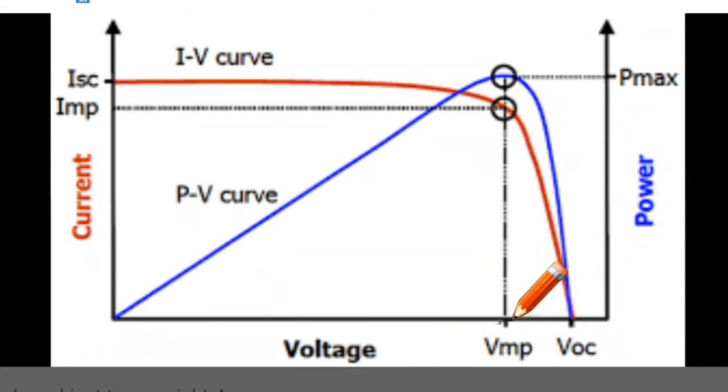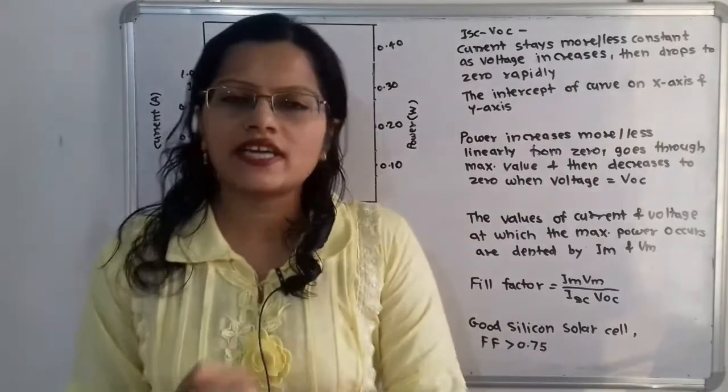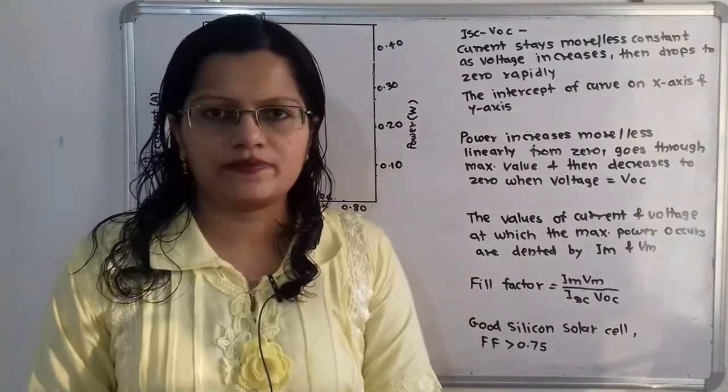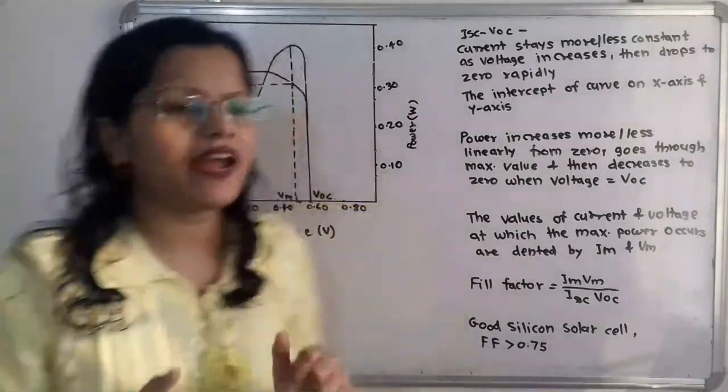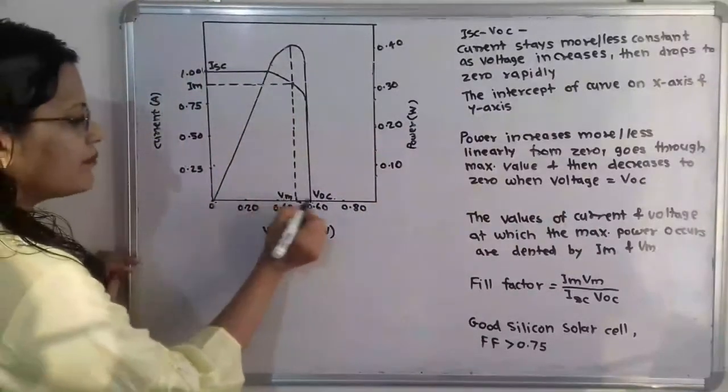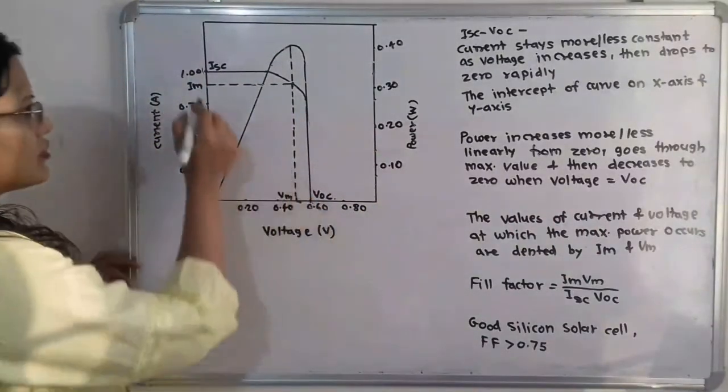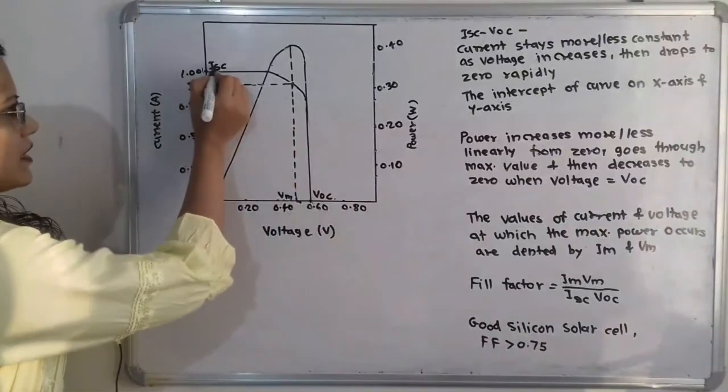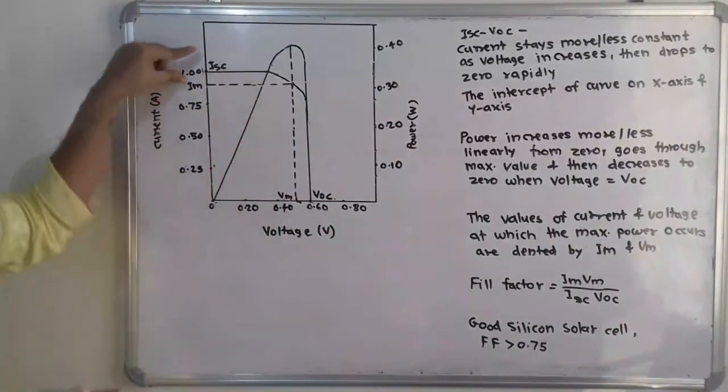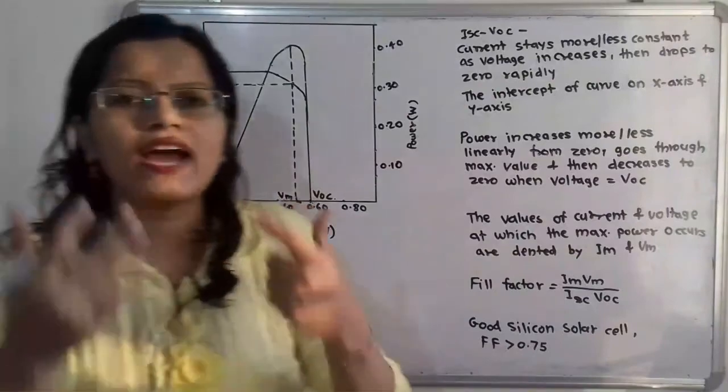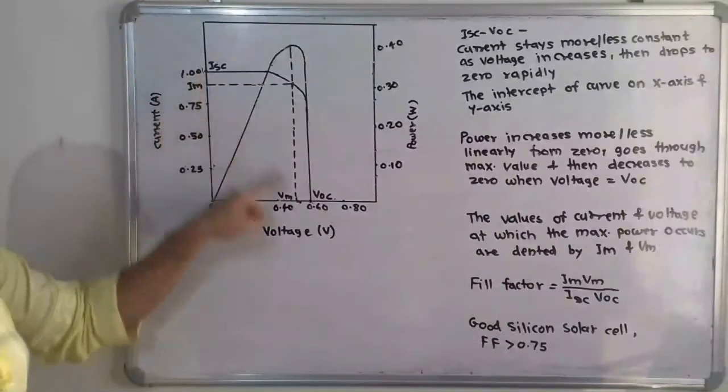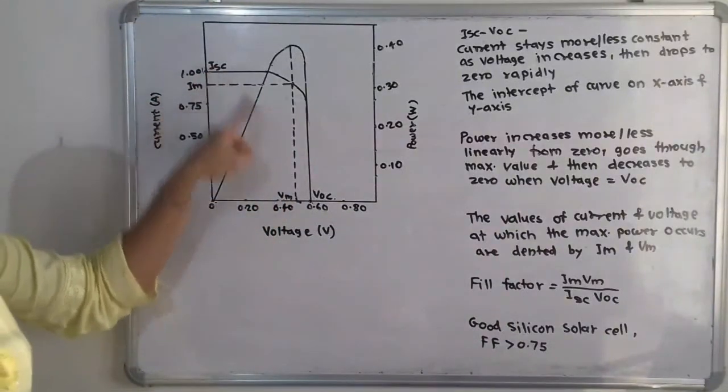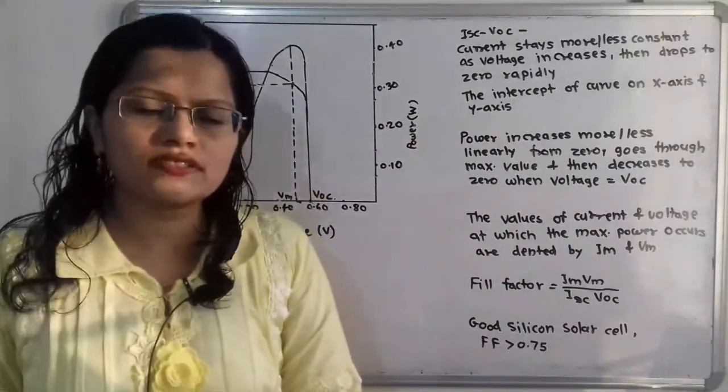Now how the performance of this solar cell can be calculated? So there is one factor, it is called as fill factor. So this fill factor is regarding Vm, Voc, that is maximum volt, open circuit voltage, then maximum current and short circuit current. So with the help of these four points we have to calculate the fill factor. So fill factor is equal to Im Vm divided by Isc Voc. So this is the formula for the calculation of fill factor.